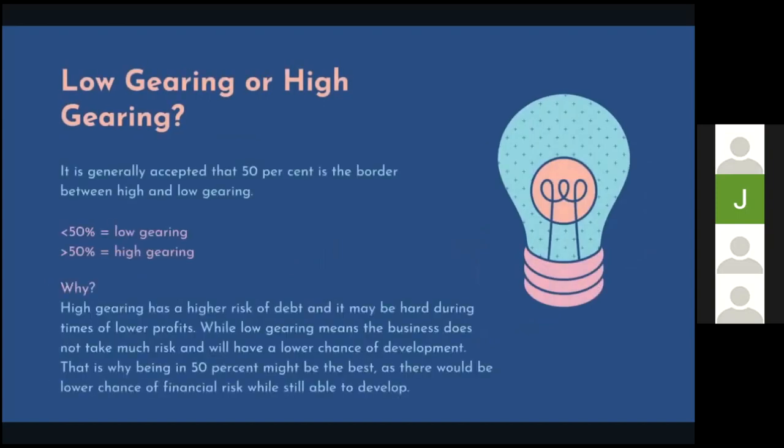That brings to question: low gearing or high gearing? It is generally accepted that 50% is the border between high and low gearing, while low gearing is below 50% and high gearing is above 50%. Why 50%? High gearing has a high risk of debt and may be hard during times of lower profits. Low gearing means the business does not take much risk and will have a lower chance of development. That is why being at 50% might be the best, as there is a lower chance of financial risk while still being able to develop.